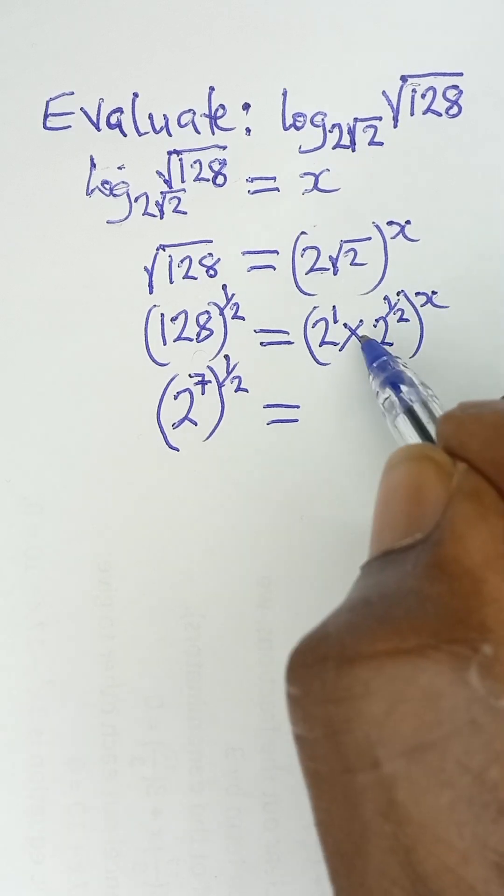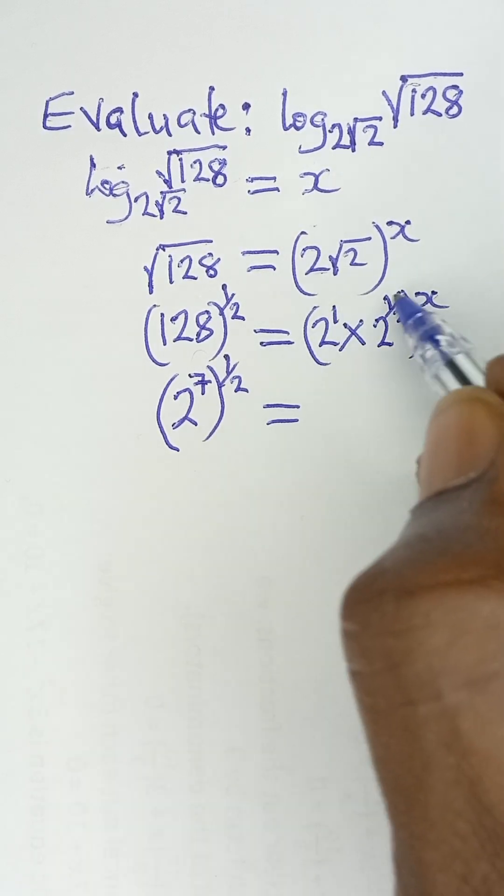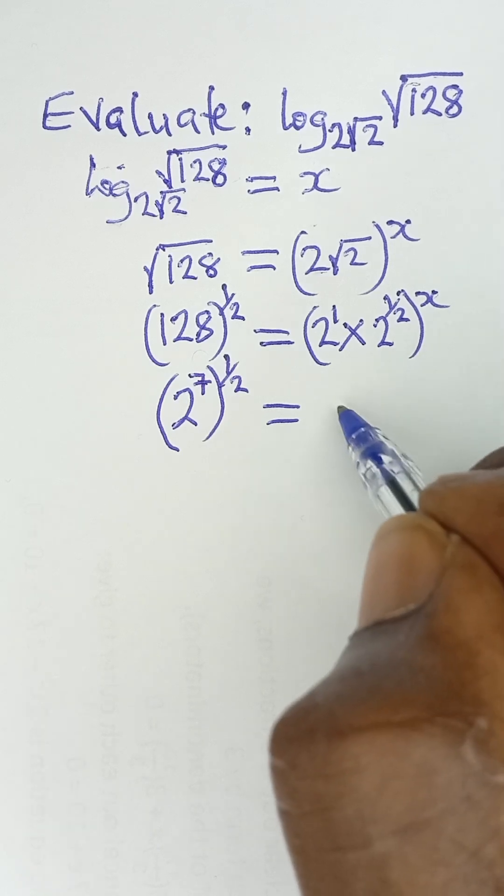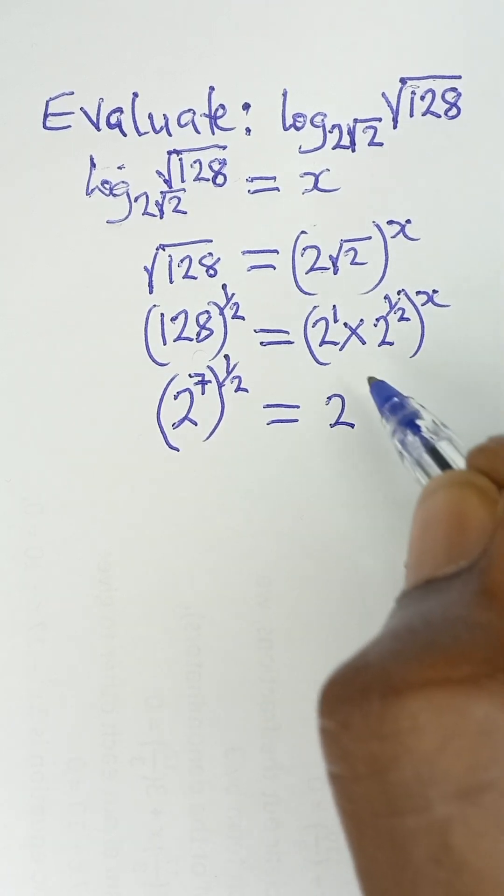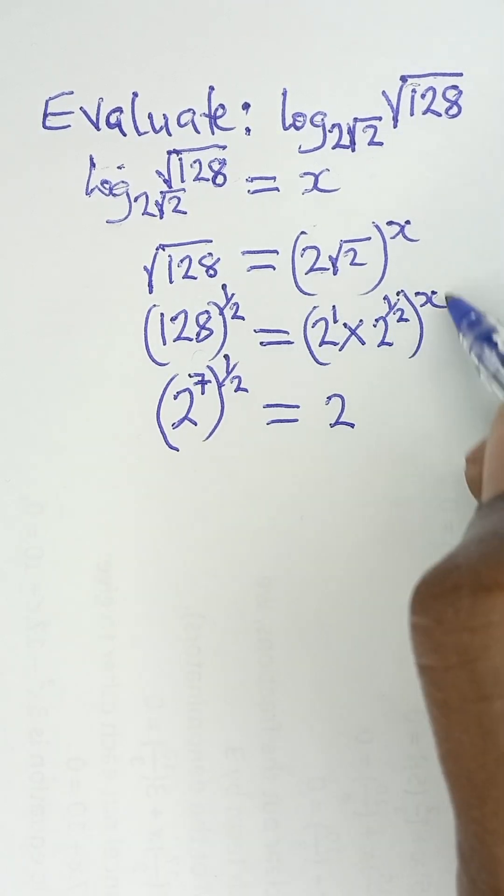Because they are multiplying, we add the powers. So 1 plus 1 over 2 gives 3 over 2. Then 2 raised to power 3 over 2, and we multiply 3 over 2 by x.